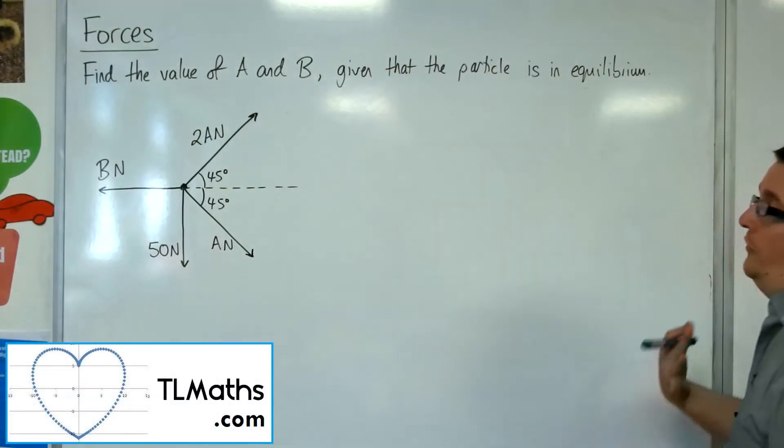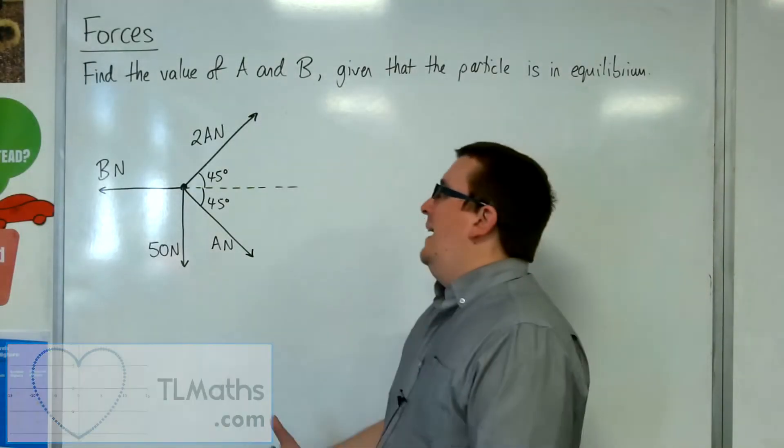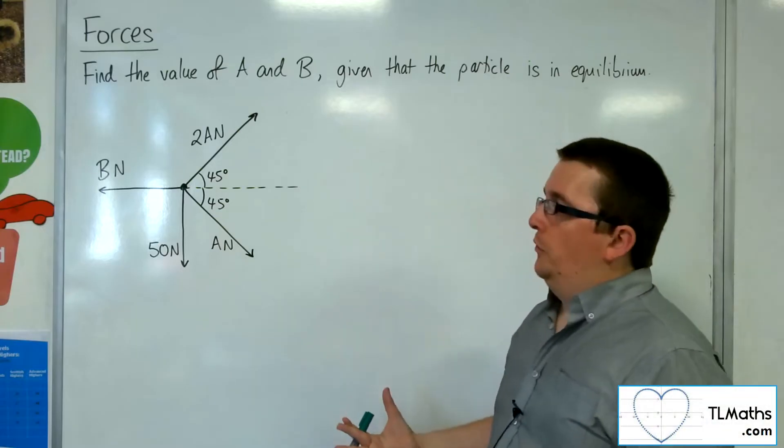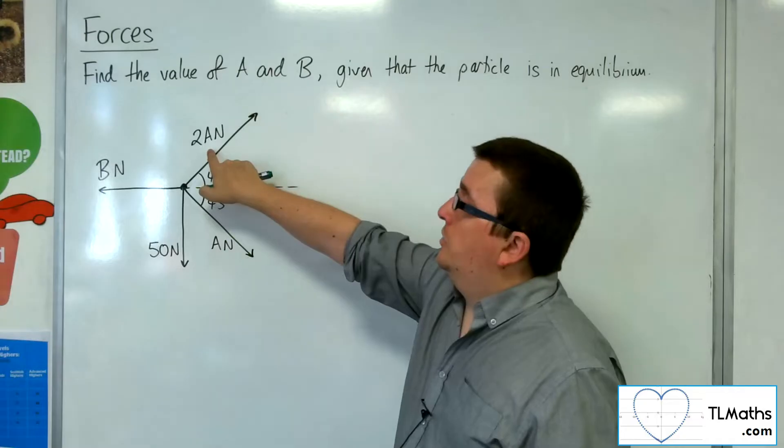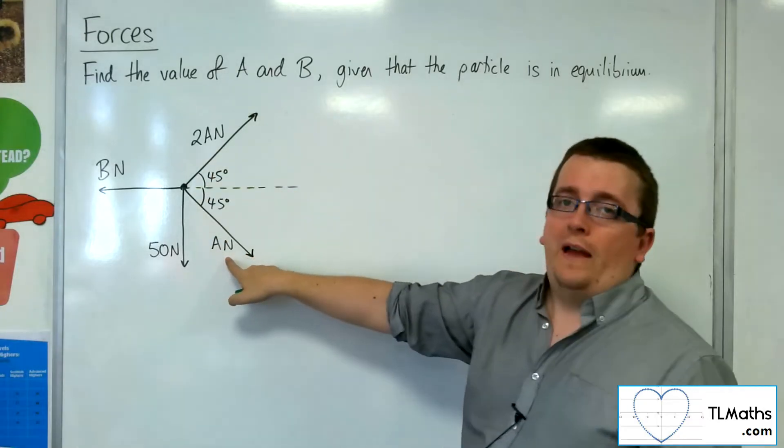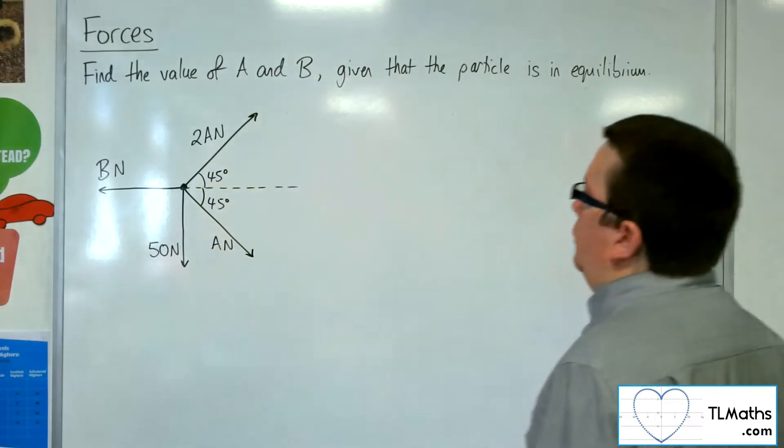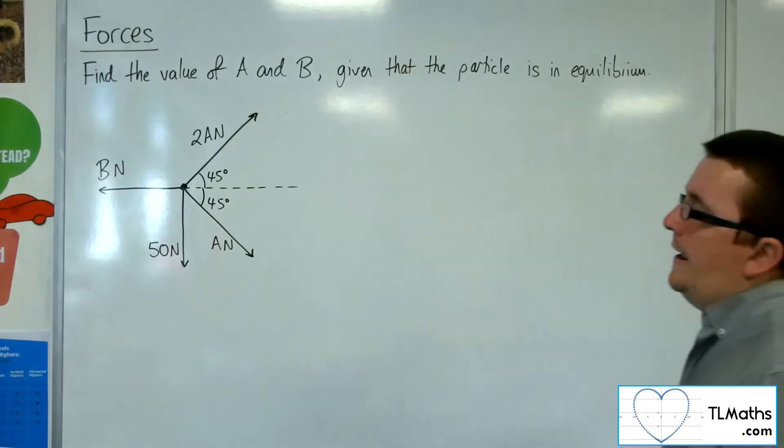Okay, so we've got this particle that's in equilibrium, and it's being acted upon by these four forces, where this force's magnitude is twice the size of that one. So we need to calculate A and B.